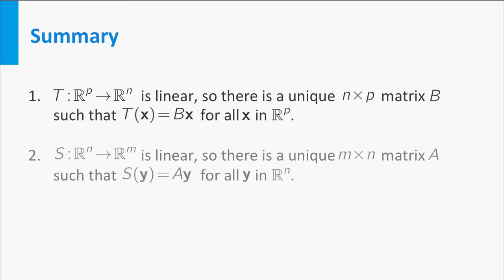Secondly, we have a linear transformation S from Rn to Rm. Again, the transformation is linear so a unique m by n matrix A exists such that S of y is A times y for all vectors y in Rn. Thirdly, since the domain of S is equal to the codomain of T, we have the composite mapping S after T from Rp to Rm.